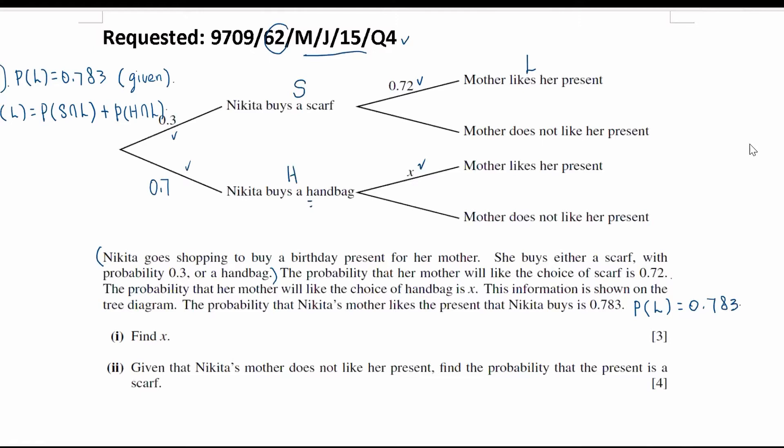From the calculations, this is 0.783, given by the questions. So, probability that Nikita buys a scarf given from the tree diagram is 0.3, and multiplied with her mother likes the present, which is 0.72.